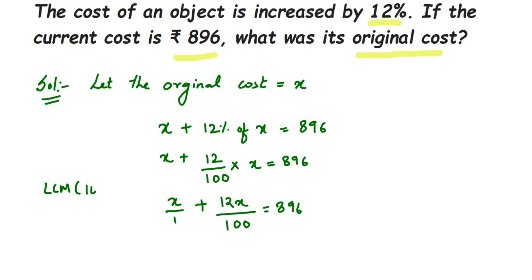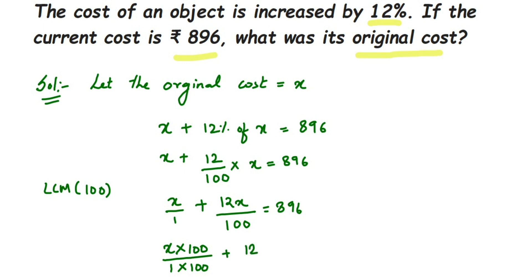We need to make the denominator 100. For the first term x/1, we multiply both numerator and denominator by 100, giving us 100x/100. For the second term 12x/100, we don't need to do anything because it already has 100 in the denominator. So we get 100x/100 plus 12x/100 equals 896.